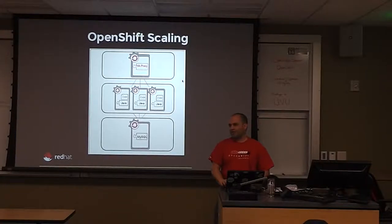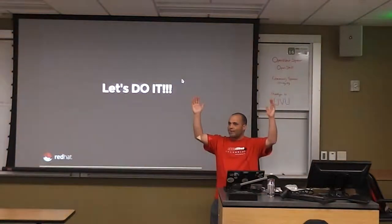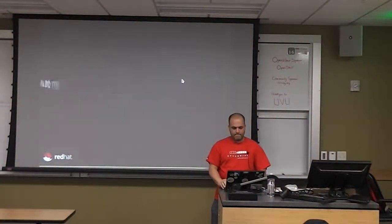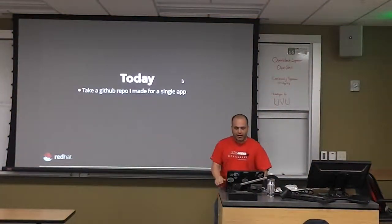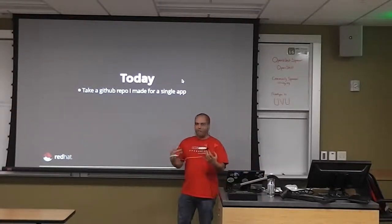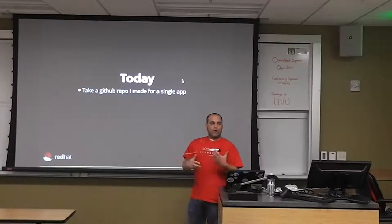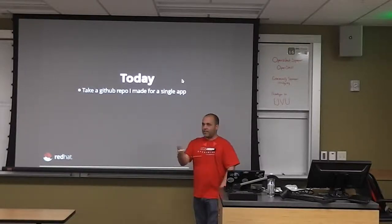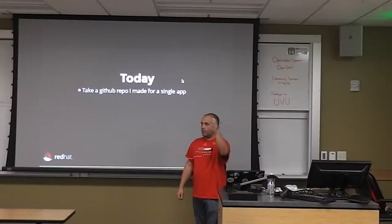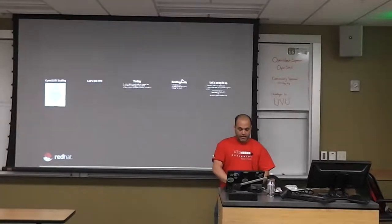Let's do the demo. Today I'm going to take a GitHub repo I made for a single app. I love spatial applications — that's my background. To learn Mongo and Python I built a little REST web service: you put in a request and I return JSON about the national parks in the United States. I loaded it into Mongo and this is what the app looks like running on OpenShift.